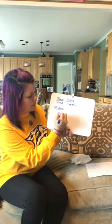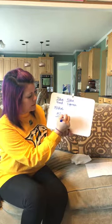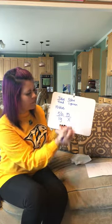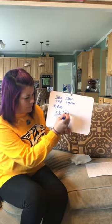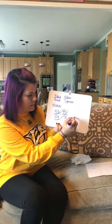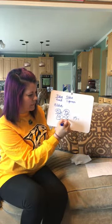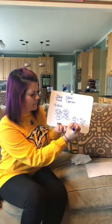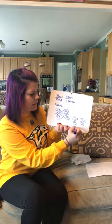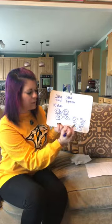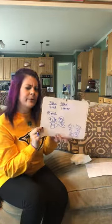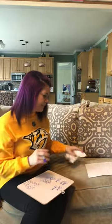Blue to green is 5 to 1, and we know we have 15 blue, so: 5/1 = 15/x. Cross-multiplying: 15 times 1 is 15, and 5 times x is 5x. Divide both sides by 5: x equals 3. So we have 3 green beads.